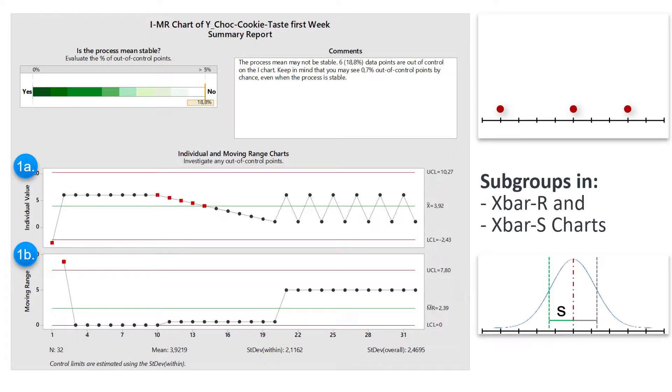In the X-bar-S chart, the variation is indicated by data points with a standard deviation in the subgroups. And in the X-bar-R chart, each data point represents the range in the respective subgroup.